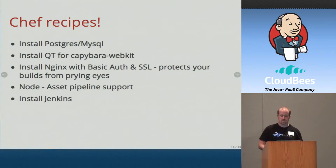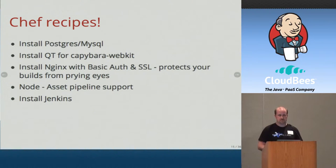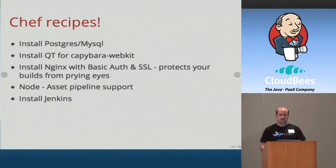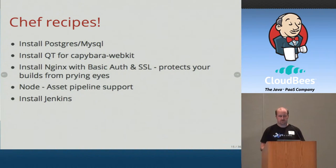We don't want to think about Jenkins security — we trust Nginx basic auth and SSL a lot more. So we set up Nginx, basic auth, and SSL with a self-signed certificate. You get a certificate warning, which is good enough for us because it keeps information safe. We also install Node for the asset pipeline, and last but not least, we install Jenkins.